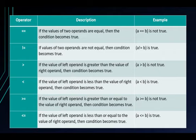The greater than operator states that if the value of the left operand is greater than the value of the right operand, then the condition becomes true. The greater than or equal to operator states that if the value of the left operand is greater than or equal to the value of the right operand, then the condition becomes true. The less than or equal to operator states that if the value of the left operand is less than or equal to the value of the right operand, then the condition becomes true.